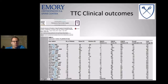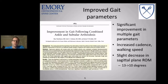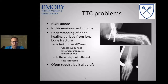TTC can do good things. A study from Jim Brodsky's group in Dallas — my mentor — showed that TTC fusion can really help patients: you can increase cadence and walking speed, with only a slight decrease in sagittal plane motion. But they're not without problems. Non-union is the biggest issue. Here at Emory, we're developing an animal model because we think the bone healing environment at the arthrodesis site is unique — different from long bone fractures — involving cancellous rather than cortical surfaces.